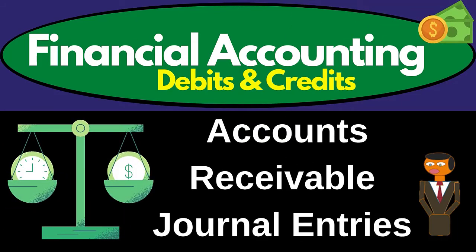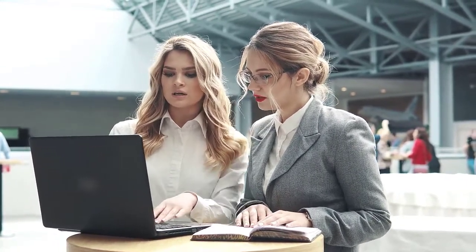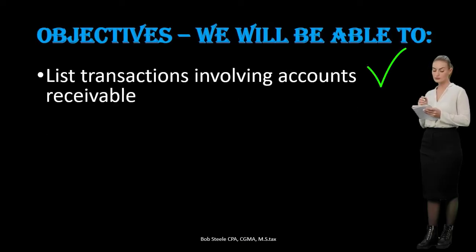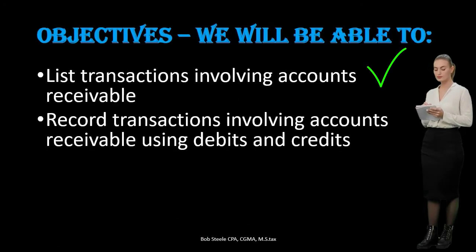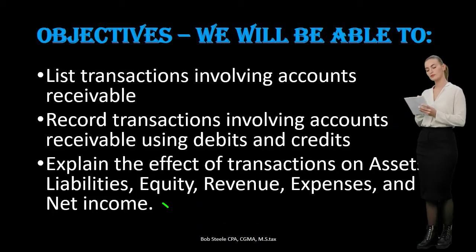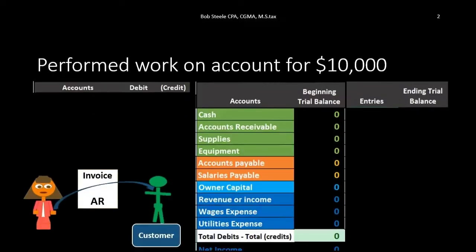In this presentation we will be recording journal entries for business transactions related to accounts receivable, otherwise known as the revenue cycle. We will be recording these using debits and credits. At the end of this we will be able to list transactions involving accounts receivable, record transactions involving accounts receivable using debits and credits, and explain the effect of transactions on assets, liabilities, equity, revenue, expenses, and net income.